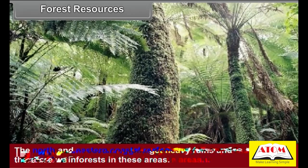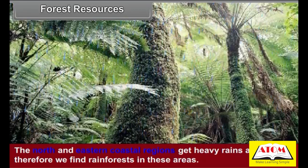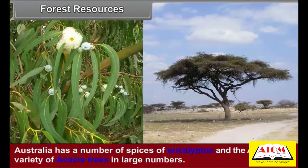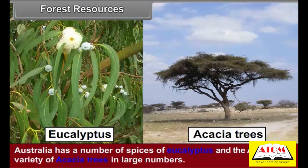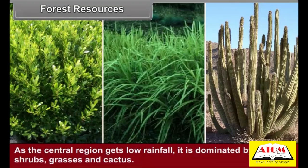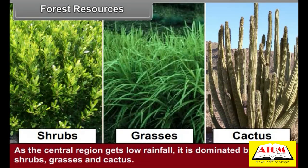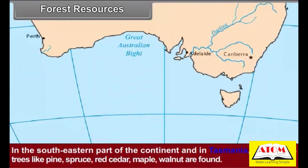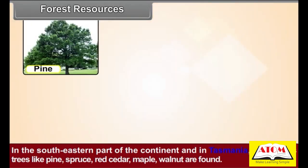The north and eastern coastal regions receive heavy rains and therefore have rainforests. Australia has a number of species of eucalyptus and acacia trees in large numbers. As the central region gets low rainfall, it is dominated by thorny shrubs, grasses, and cacti. In the southeastern part of the continent and in Tasmania, coniferous trees are found.